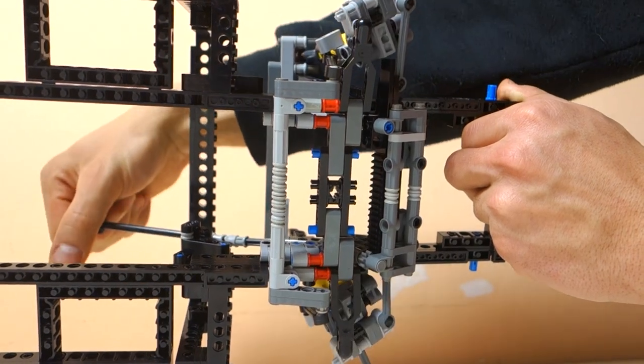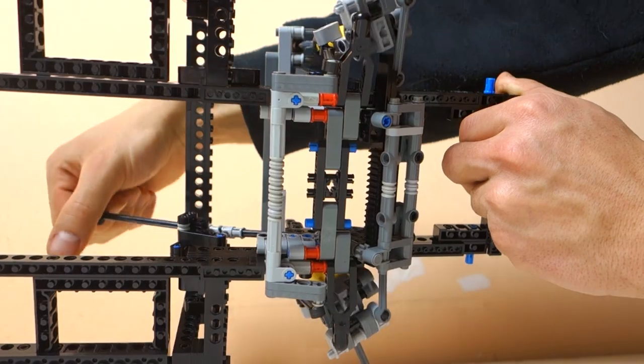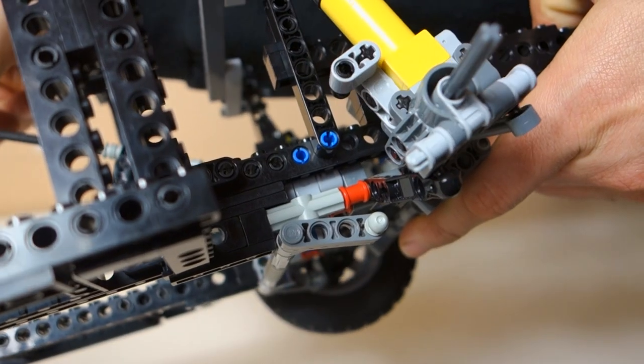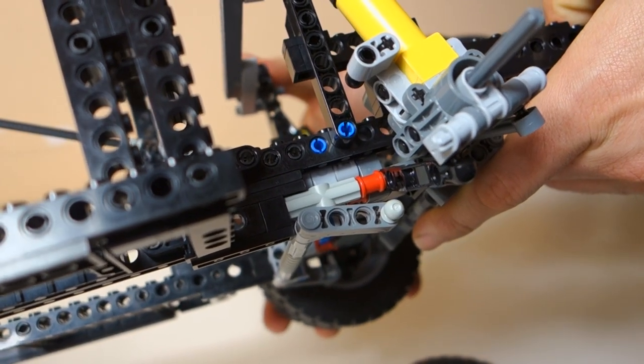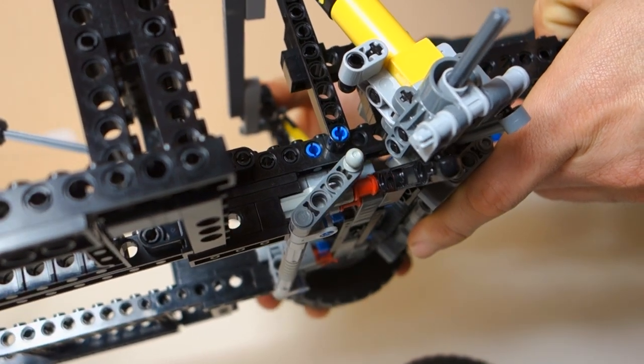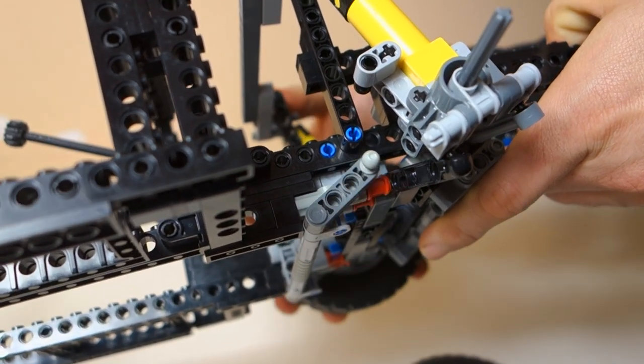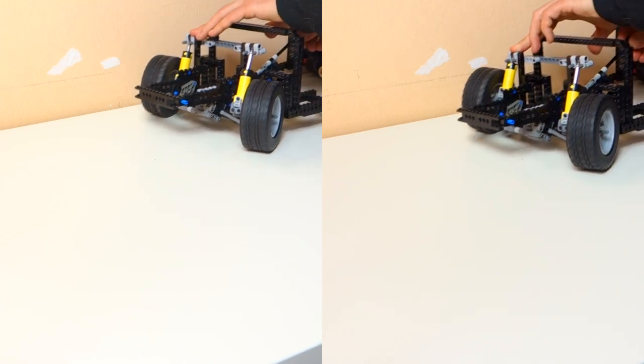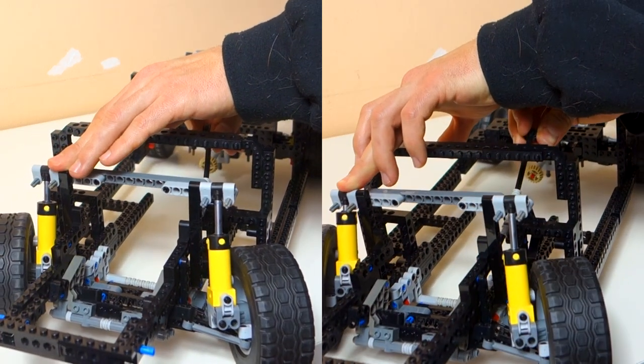The effect of the anti-roll bar however is very noticeable in corners. If I compare the stiffness in the corner with or without the links connected, the lean in the corner is much less and you can really feel how the car leans on the anti-roll bar. All my future cars will have to feature this from now on.